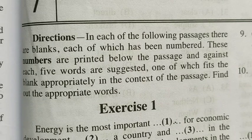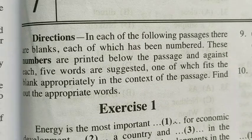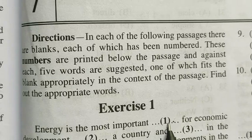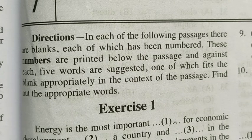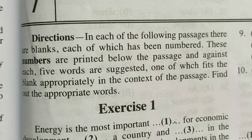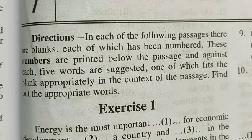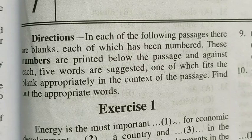So basically, this is a paragraph. In the paragraph we have blanks numbered 1, 2, 3. Number 1 has 5 options, number 2 has 5 options, number 3 has 5 options — there are 5 words for each blank. From those 5 words we have to choose the best one, the one that gives the right value. So let's start.